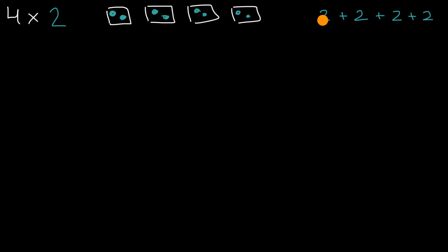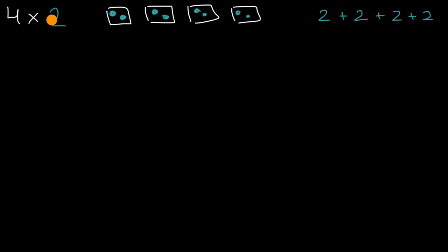So we could view it as two plus two plus two plus two. Two plus two is four, four plus two is six, six plus two is eight. We can also skip count: two, four, six, eight — four times two is equal to eight.